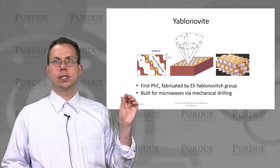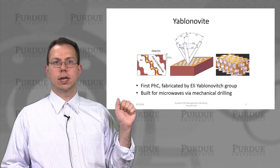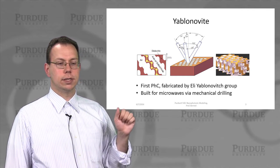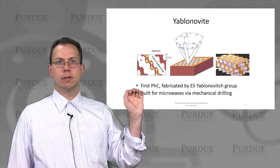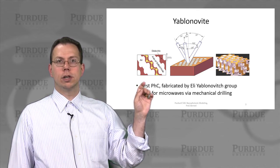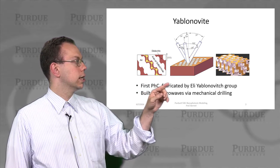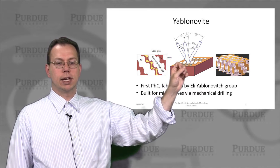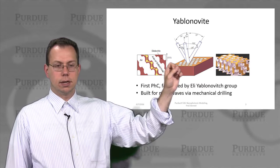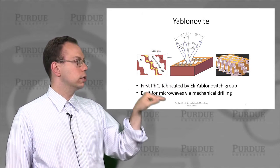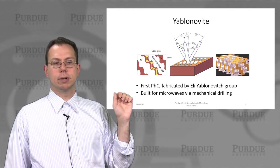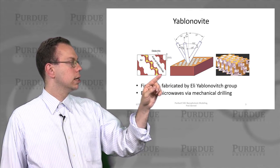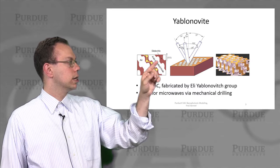This was actually the first full 3D photonic crystal fabricated, which is called Yablonovite in honor of its inventor, Eli Yablonovitch. What they did was they took some sort of soft material and then actually drilled three holes into it in different directions. As you can see, they're basically separated from the normal by 35 degrees, but they have about 120-degree rotation in the azimuthal direction.